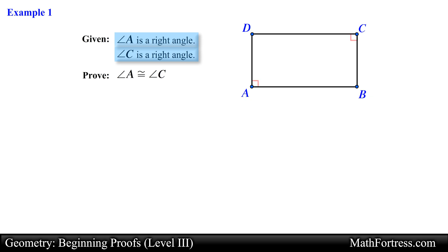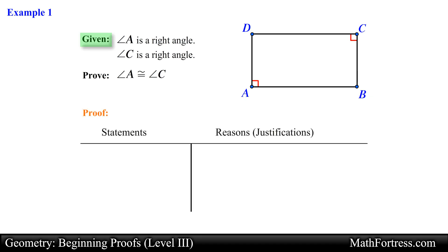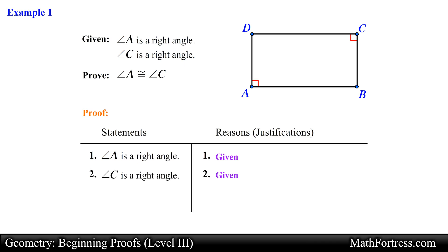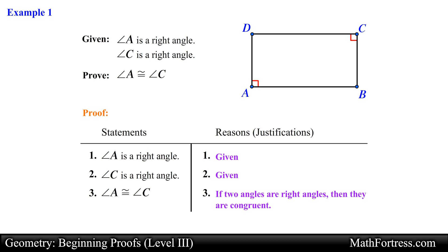So let's go ahead and mark angle A and angle C as right angles. Next we will prove the conjecture by using a two-column proof. We start with angle A is a right angle and the reason is that it is given. Next we write angle C is a right angle and the reason is because it is also given. With these two statements we can now conclude that angle A is congruent to angle C. The reason is that if two angles are right angles then they are congruent. Notice that this reason is essentially the right angles theorem that we proved in the previous video.